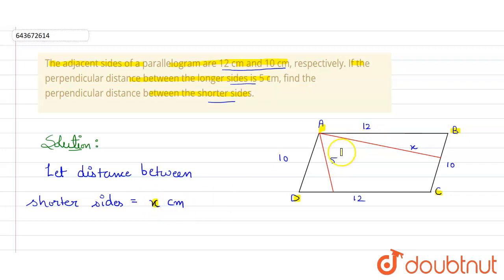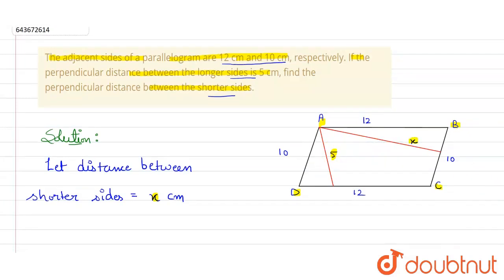Now we know that area of parallelogram will be the same either for this altitude or for this altitude. If I take area with respect to 5, it will be same as area with respect to x because they both lie in the same figure. So we know that area of a parallelogram is equal to base into altitude.